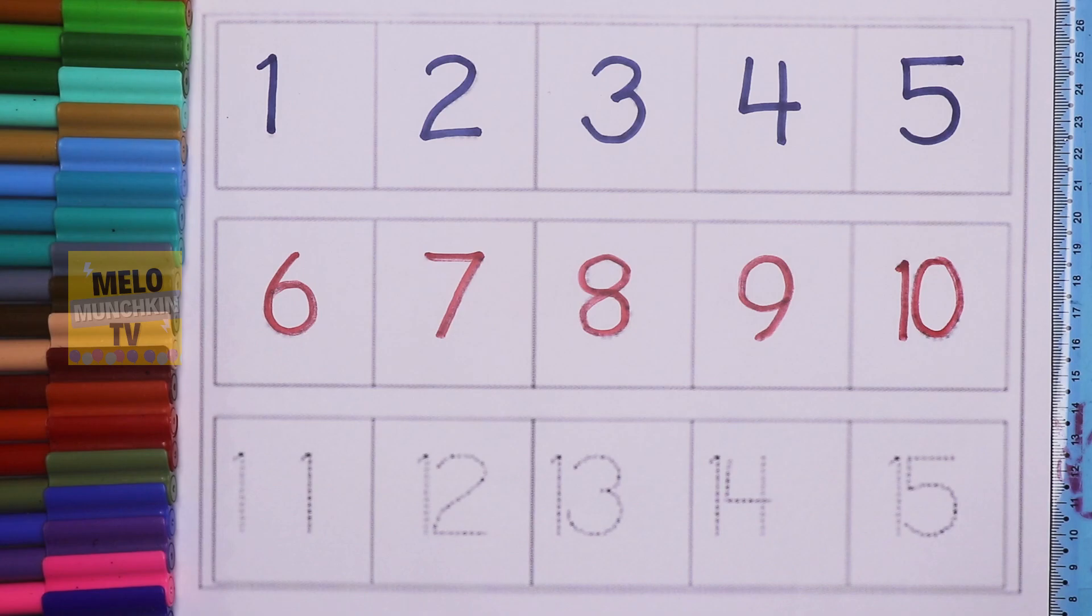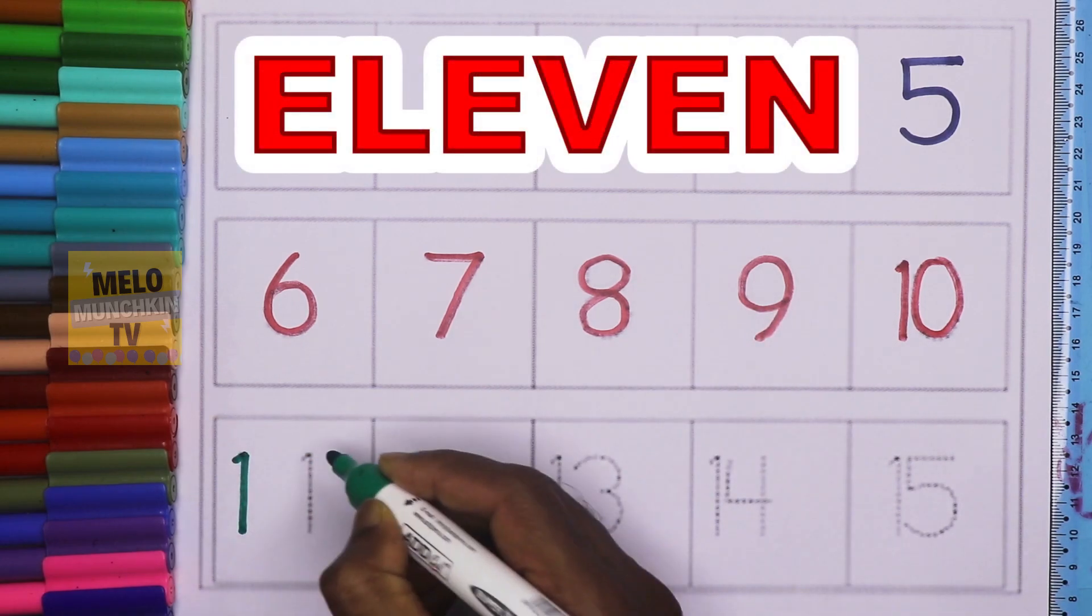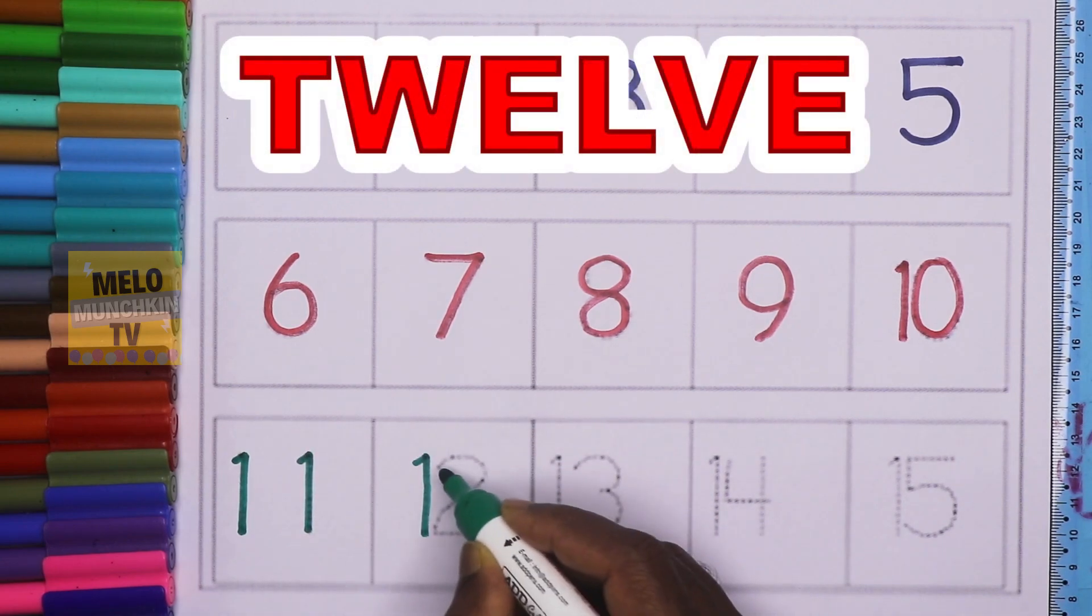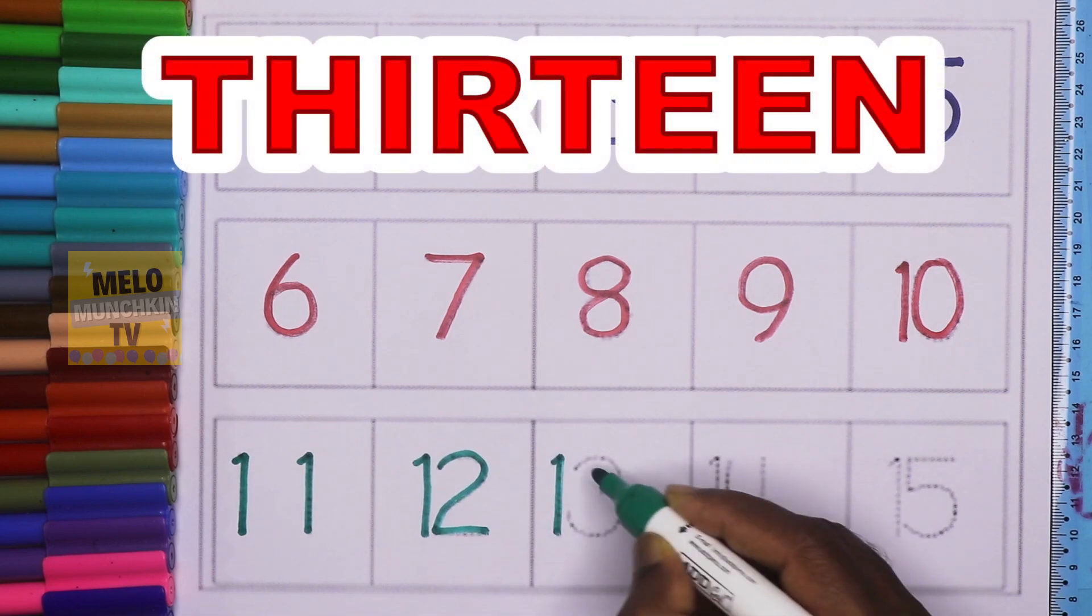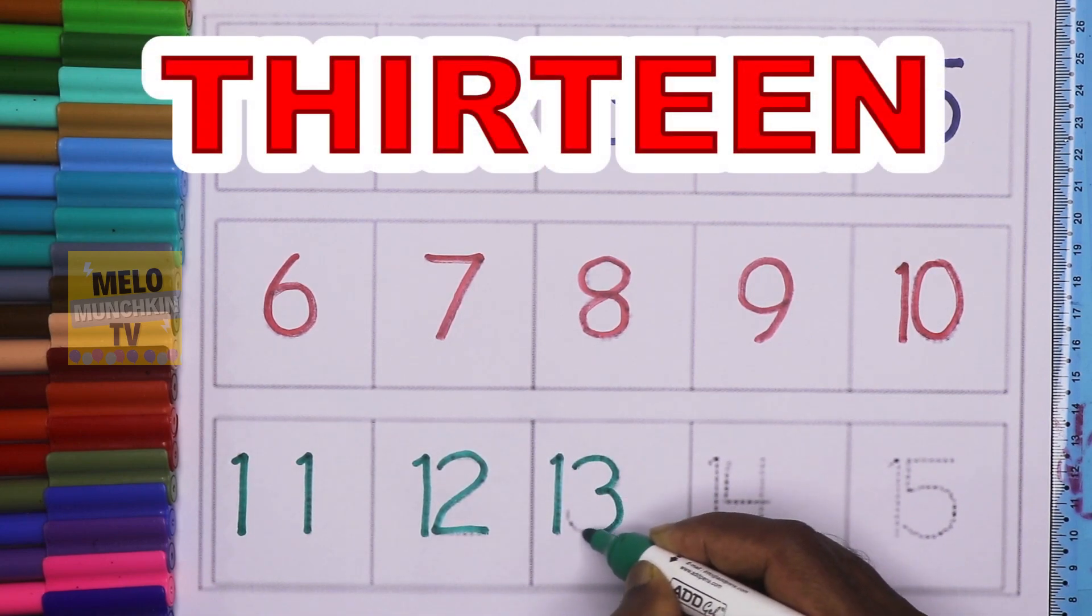The next color is green. 11, e-l-e-v-e-n, eleven. 12, t-w-e-l-v-e, twelve. 13, t-h-i-r-t-e-e-n, thirteen.